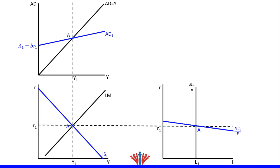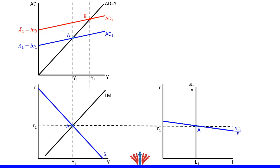Let's assume there is a positive shock in the goods market, such as an increase in wealth. This will result in higher consumption and consequently higher aggregate demand, so the AD curve will shift upward and we will label it AD2. We will get a new equilibrium point at the intersection of AD2 and the 45-degree line, labeled as point B. We will draw a vertical dotted line to reflect the new equilibrium output Y2 in the goods market and IS-LM model.